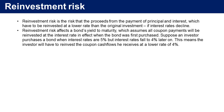The next key type of risk is called reinvestment risk. Reinvestment risk is the risk that the proceeds from the payment of principal and interest will have to be reinvested at a lower rate than the original investment if interest rates decline. Calculation of the yield to maturity of a bond assumes that the cash flows received are reinvested. The additional income from such reinvestment, sometimes called interest on interest, depends on the prevailing interest rate levels at the time of reinvestment.